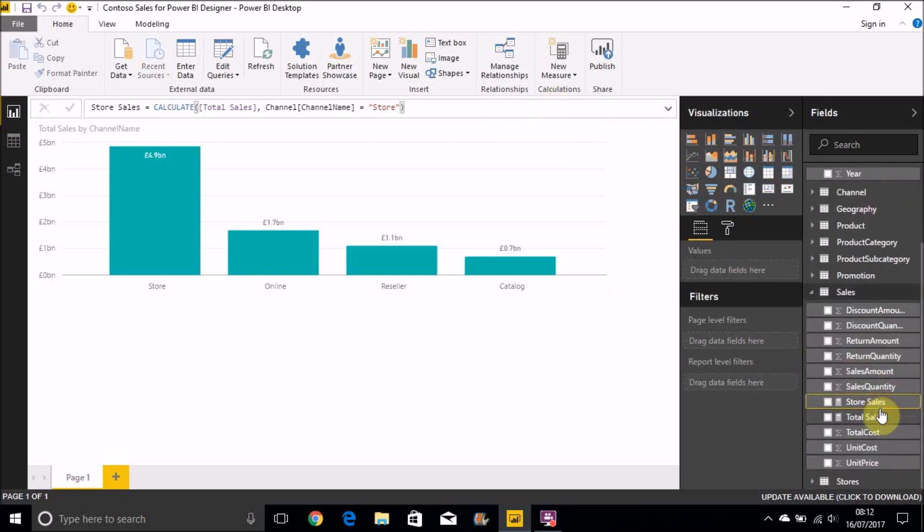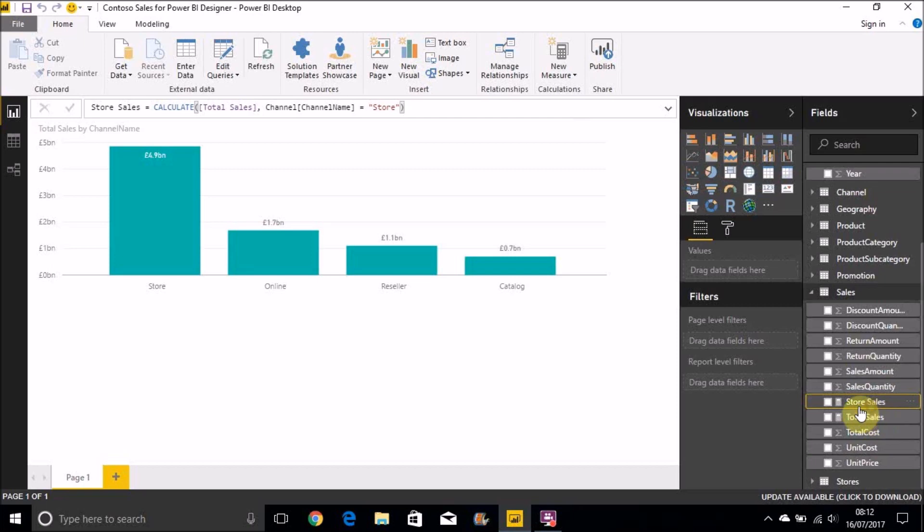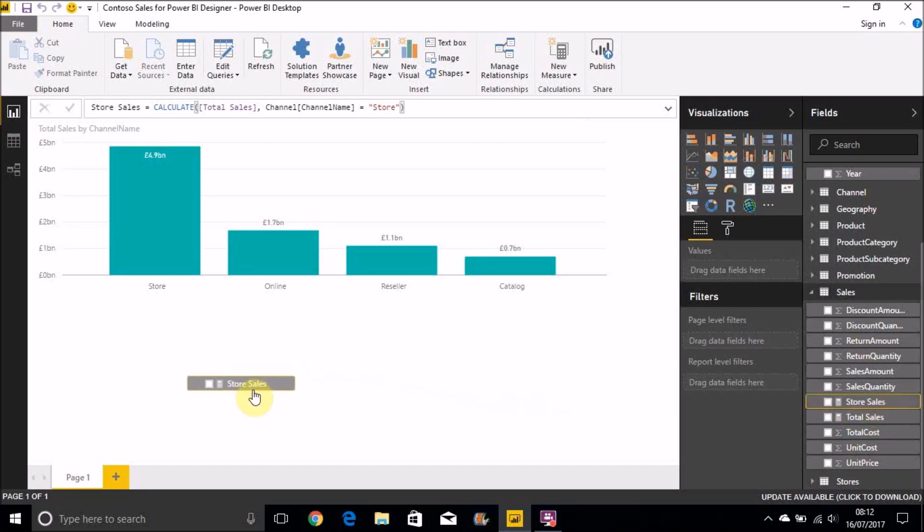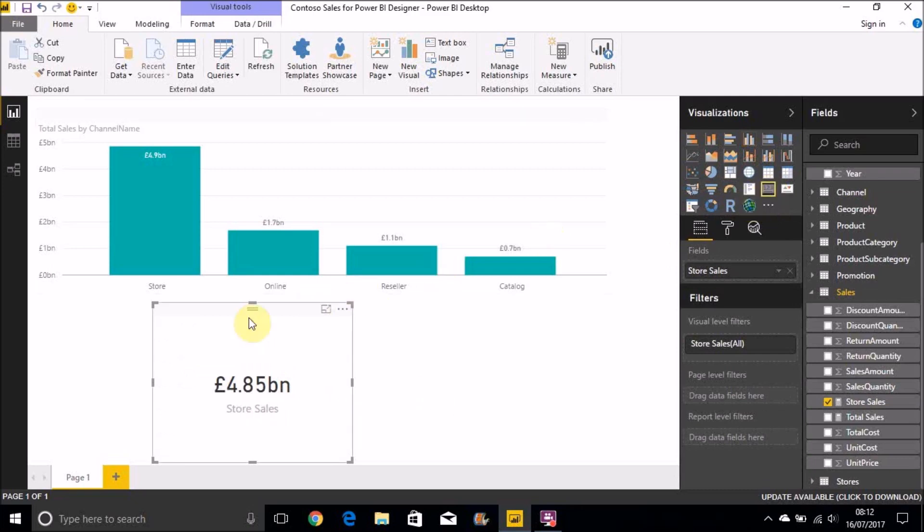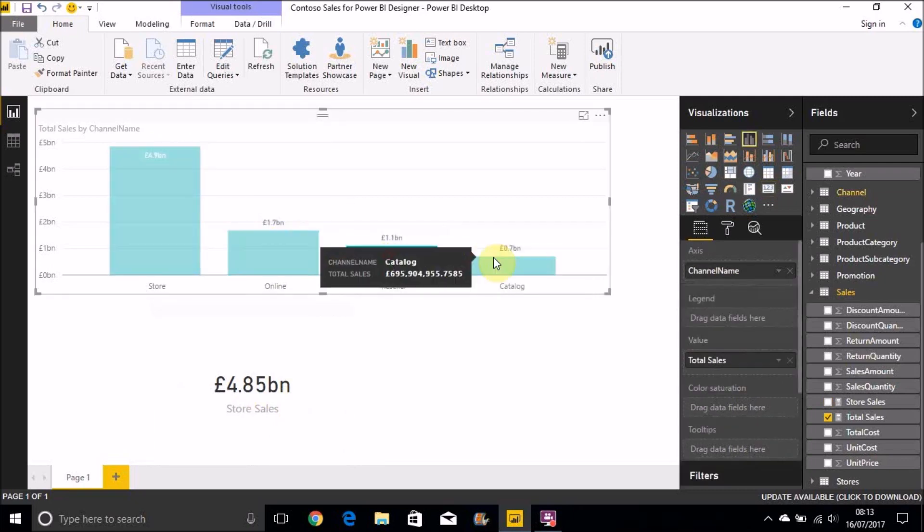And then we can show that. We just bring the Store Sales measure across. I'll just make that into a card. And then we can see there with the 4.85 billion Store Sales equates to the 4.9 there we have on our chart. And then I can go across and filter using the chart, but that doesn't change the Store Sales value that we're showing there.